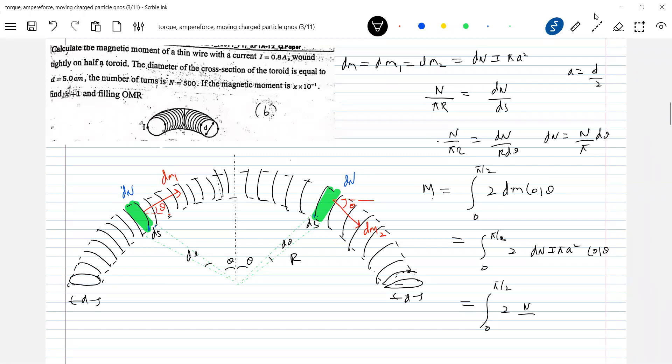So 2 N I A square integral of cos theta d theta, 0 to pi by 2. Cos theta, this will be sin theta.